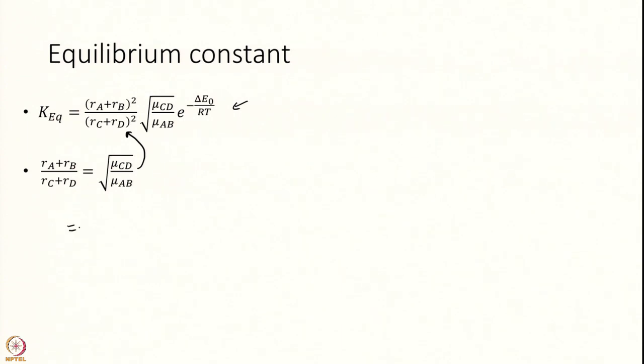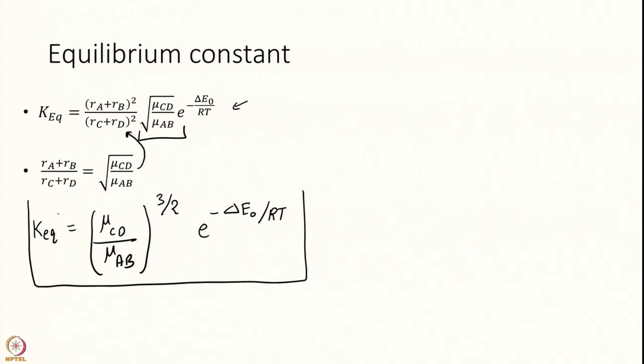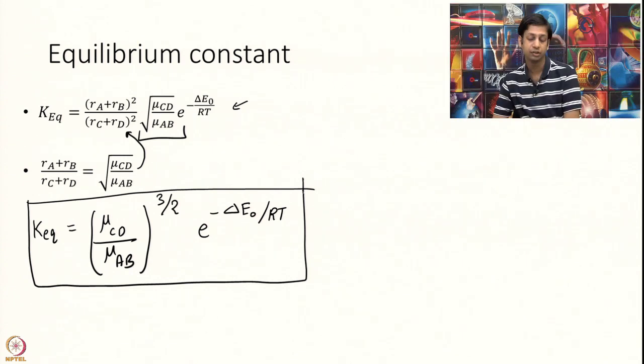This will become equal to mu_CD over mu_AB. A very powerful relation. The radii have to be related, they cannot be arbitrary because angular momentum is conserved. Earlier I derived K equilibrium to be this big equation and now we have found the relation between the radii. So I am going to substitute this equation here. This becomes to the power of 3/2. So according to collision theory, your equilibrium constant is given by this. It is actually independent of the radii. If you tell me the masses, the reactants and products, and the difference between the potential energy between the reactants and products, I can calculate you the equilibrium constant.